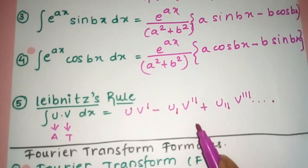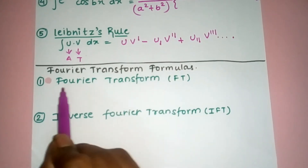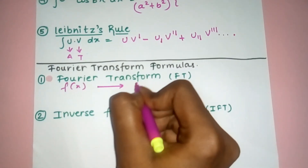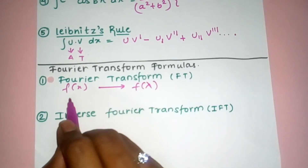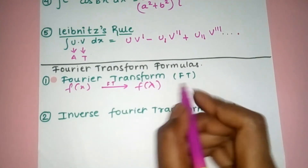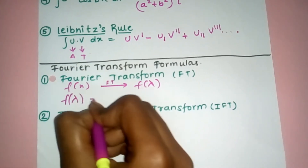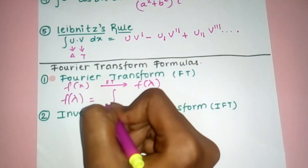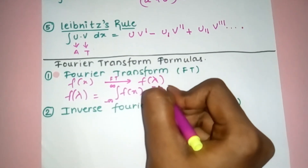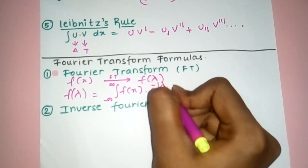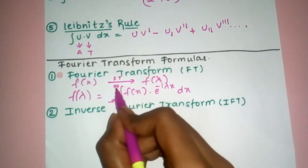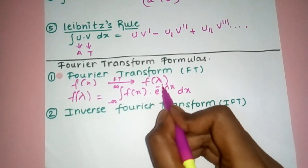Now for Fourier transform formulas. In Fourier transform, we convert f(x) into F(λ) — that is known as the Fourier transform (FT). The formula for F(λ) is: F(λ) = integral from minus infinity to infinity of f(x) · e^(−iλx) dx. This is the formula you have to remember.